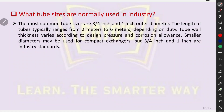What tube sizes are normally used in industry? The most common tube sizes are 3/4 inch and 1 inch OD. The length of tubes typically ranges from 2 meters to 6 meters depending on duty. Tube wall thickness varies according to design pressure and corrosion allowance. Smaller diameters may be used for compact exchangers, but 3/4 inch and 1 inch are industry standards.